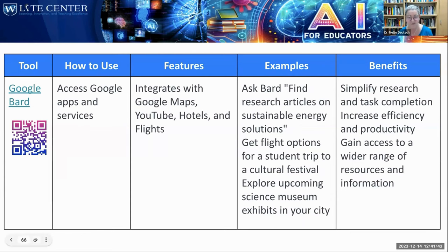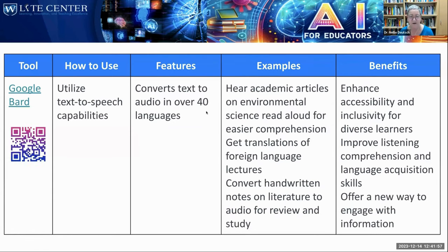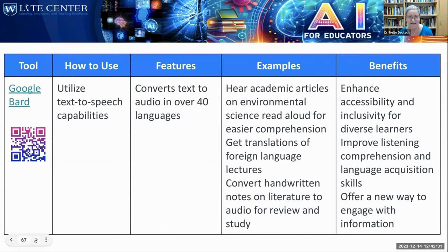Google Bard is completely free, which is an advantage over ChatGPT unless you're paying for GPT 4. You might prefer Google Bard to anything else, even though it doesn't generate images. It utilizes text-to-speech so you can speak your prompt — great for students and for anyone too tired to write. You can use it on your phone, and it converts text to audio in over 40 languages. You can also hear academic articles using Google Bard.